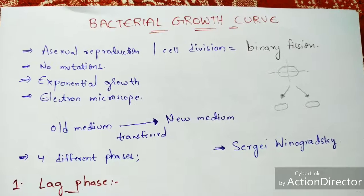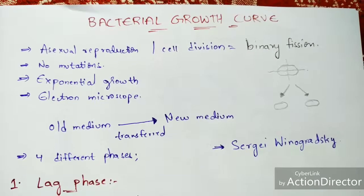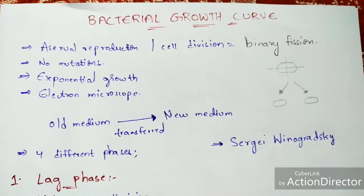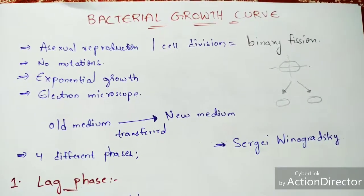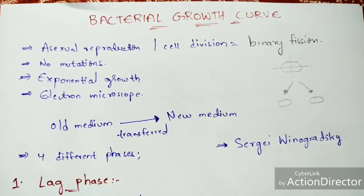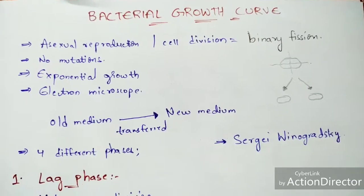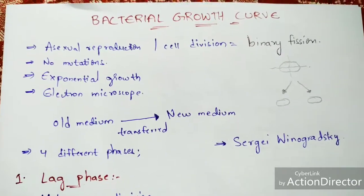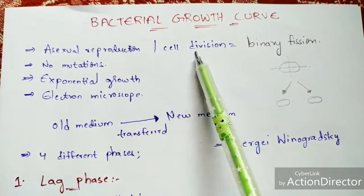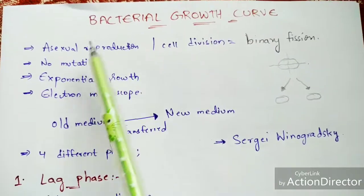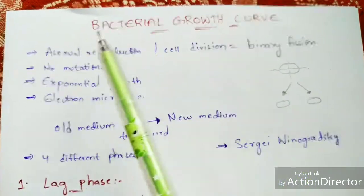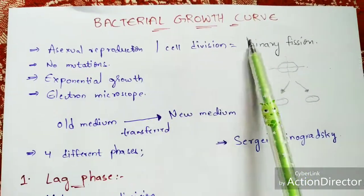In this video, let us discuss the bacterial growth curve. This bacterial growth curve begins with the division of the bacterial cell. The bacterial cell gets divided by asexual reproduction, and that process is called cell division. This phenomenon of cell division is called binary fission.